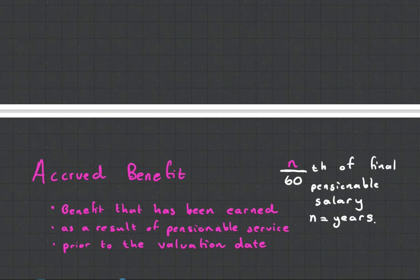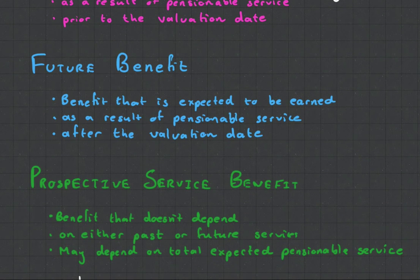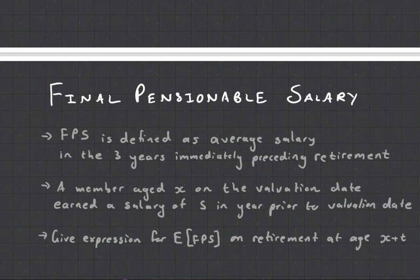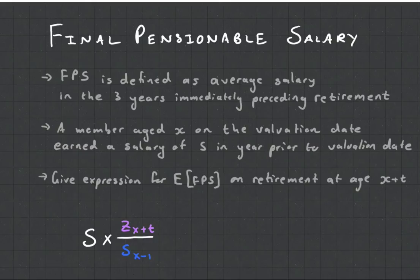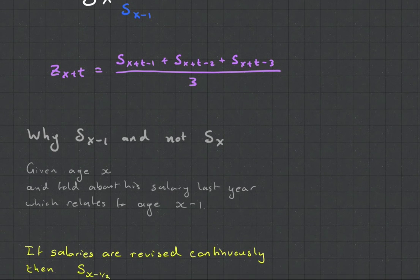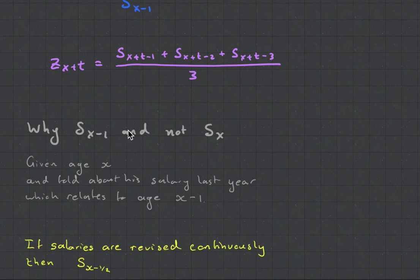Then there's also this whole accrued benefit, future benefit, prospective service benefit. Very good to read through, because you need that when you now start bringing in final pensionable salary. And what this is, it's what's your final salary going to be. And you can see we've got this other function here called Z. But Z is not that bad. It is just the average of your last three salaries. And the big thing is, with the salary scale, is note that we use SX minus 1 and not SX. This is because the question will normally talk about the salary he was making in the previous year. If the salaries are revised continuously, then it's going to be X minus a half.